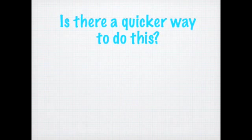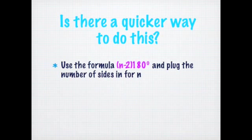So is there a quicker way to do this? Yes. Use the formula: (n − 2) × 180, and plug the number of sides in for n. If you think about what we had on the last slide, we could take the number of sides and subtract two — that's how many triangles we could make. And then triangles are 180 degrees. So that's where you get the (n − 2) × 180.